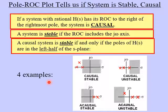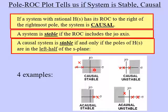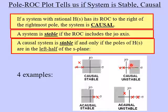Let's look at four examples to clarify this. In the first example, the ROC is to the right of the rightmost pole — out of these three poles, this one is the rightmost — so we know it's causal. The ROC also includes the j-omega axis, therefore it's stable. This is a causal and stable system. In the second example, we have three poles, and the ROC is again to the right of the rightmost pole, meaning the system is causal. However, the j-omega axis is not included inside the ROC, so this system is causal and unstable.